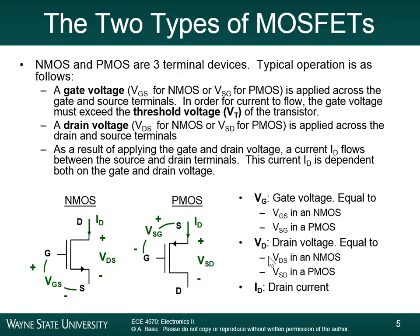A MOSFET is essentially a relay. A relay is an electronically controlled switch — you use a small current or small voltage to control a larger current. That is what a transistor is at its essence. When you put a voltage on a relay, it moves a solenoid from one place to another, and that solenoid completes the circuit for you.